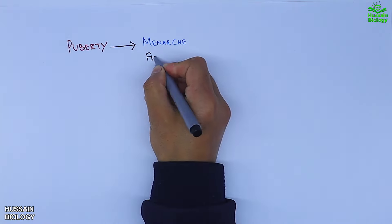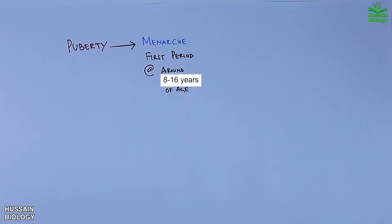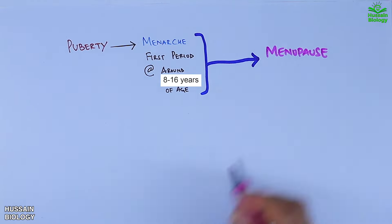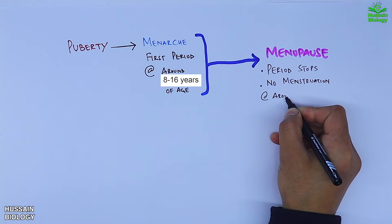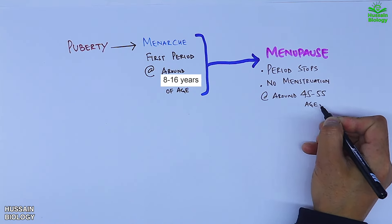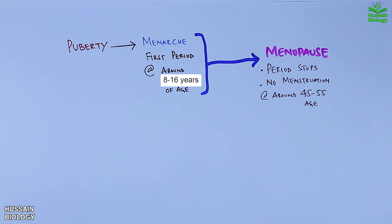The menstrual cycle doesn't start at birth — it begins at puberty, when the first period occurs, which is termed menarche, occurring around 8 to 16 years of age. This varies significantly by geographical region, race, ethnicity, and other factors. After several cycles, the female reaches menopause, the stage where periods stop and there is no more menstruation, with onset around 45 to 55 years of age, though this also differs geographically.